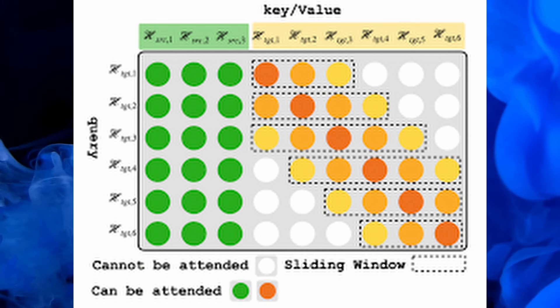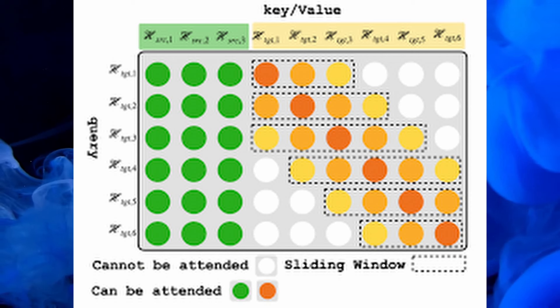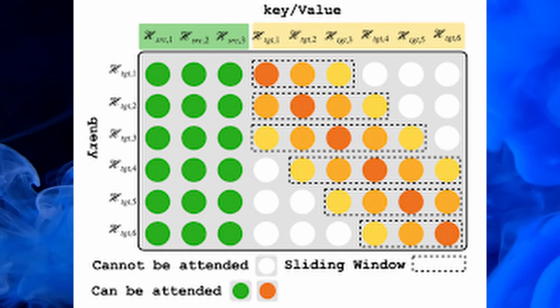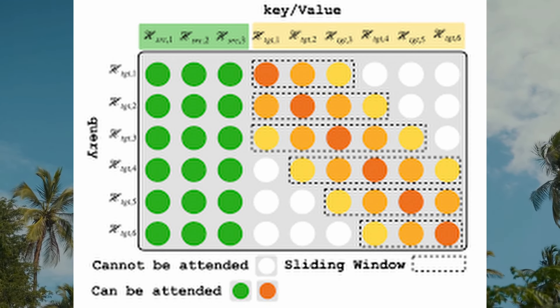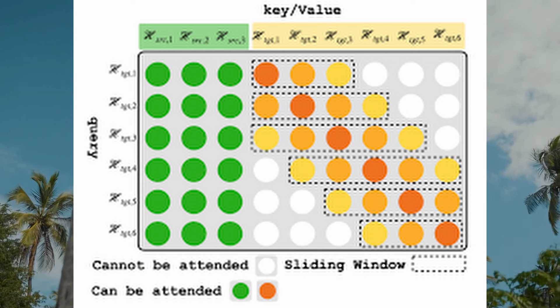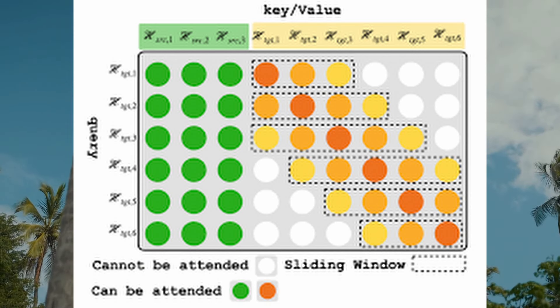Now, sliding window attention is a mechanism designed to improve the efficiency of transformer models, particularly when dealing with long sequences. By restricting attention to a fixed size window around each position, it reduces the quadratic computational complexity associated with standard self-attention.